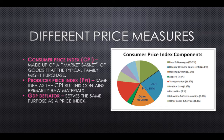We also have something called the producer price index, which is the same concept except this measures raw materials and input costs into the goods and services that we buy. And then we have the GDP deflator, which is basically a GDP price index. While the consumer price index measures a market basket, the GDP deflator measures the prices in the entire economy.